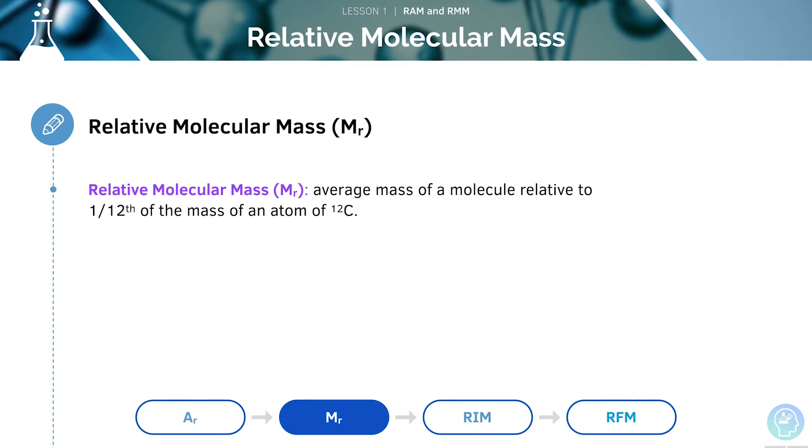The relative molecular mass is the average mass of a molecule relative to one-twelfth of the mass of an atom of carbon-12. It is the sum of the relative atomic masses of each atom within the molecule.